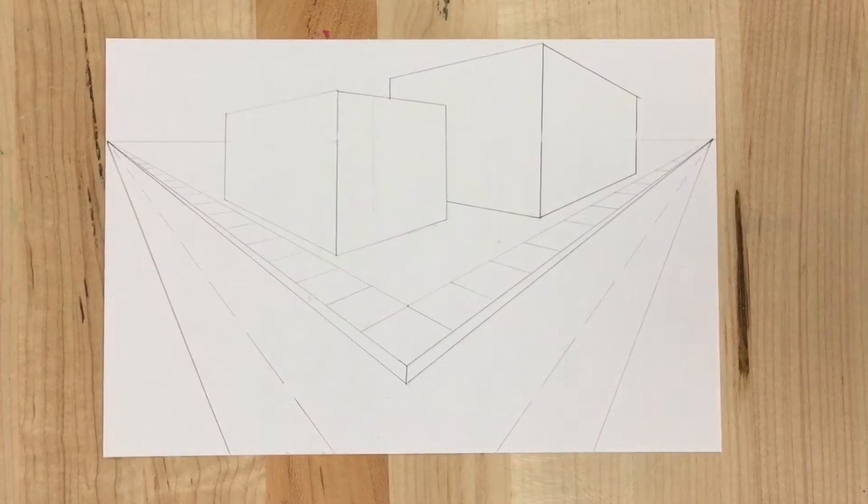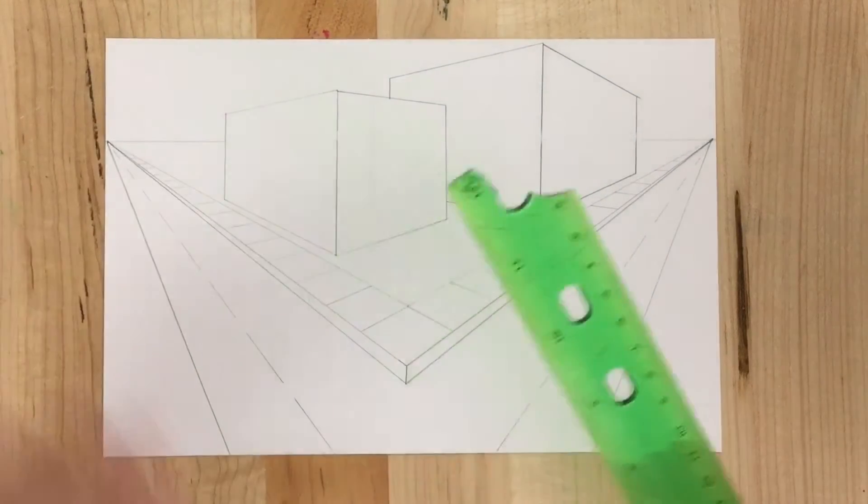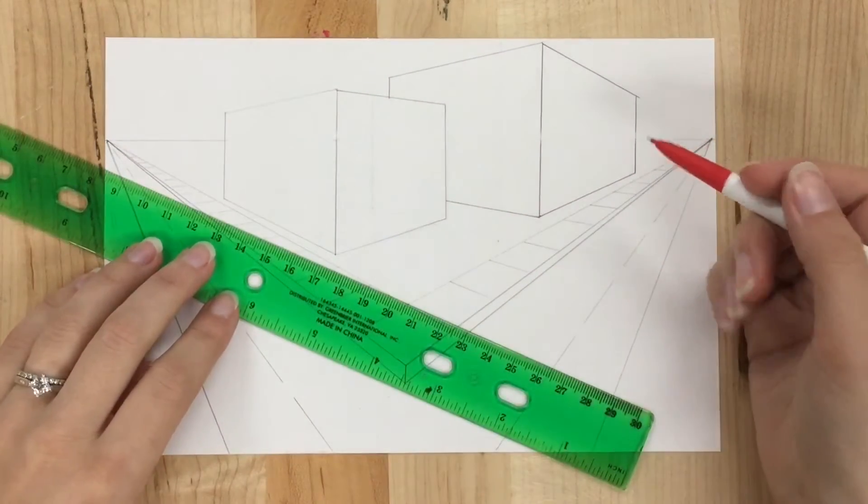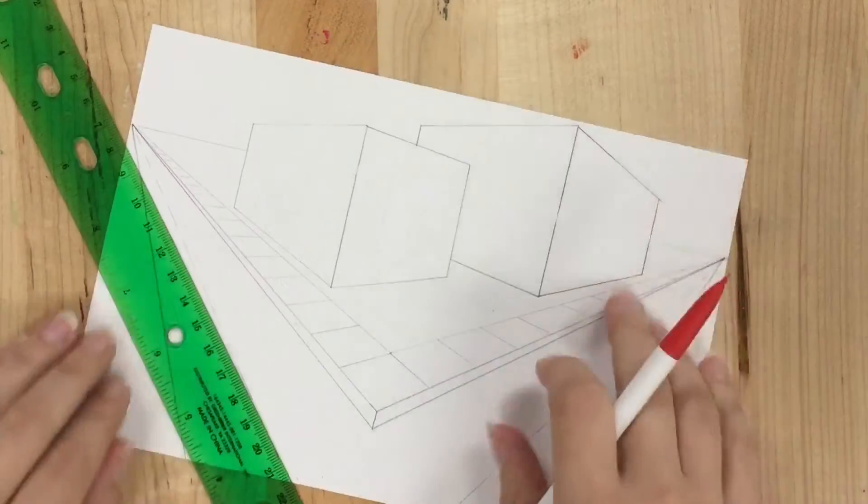My next step is going to be to add some details. I'm going to do kind of city-ish details for this one. So this side faces the road, so that's where I'm going to put my door.